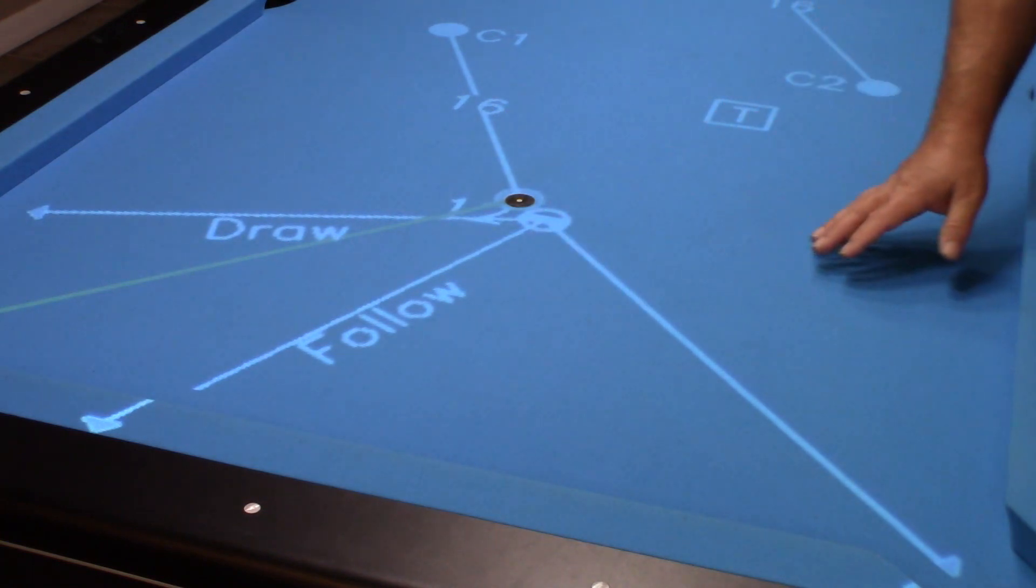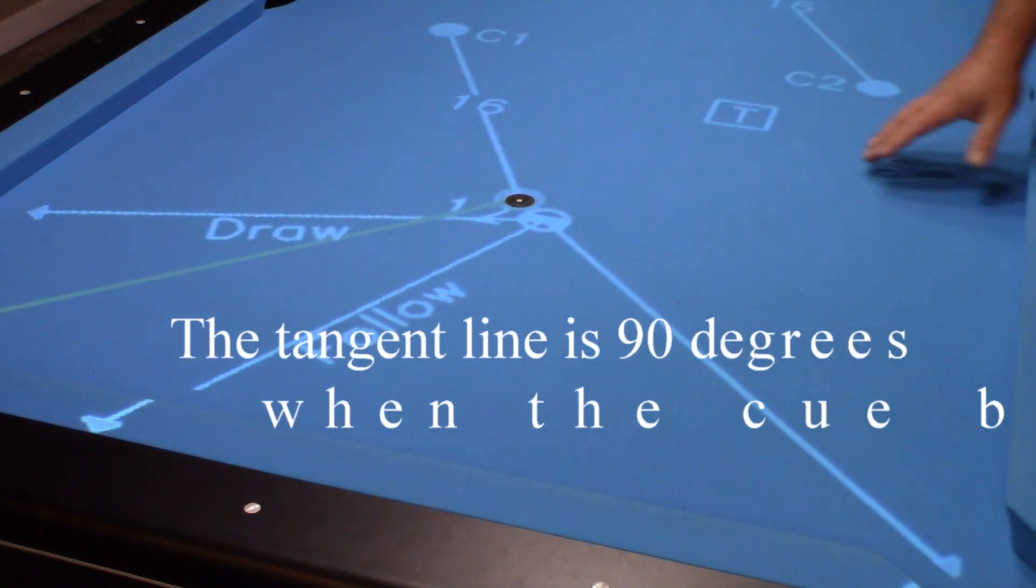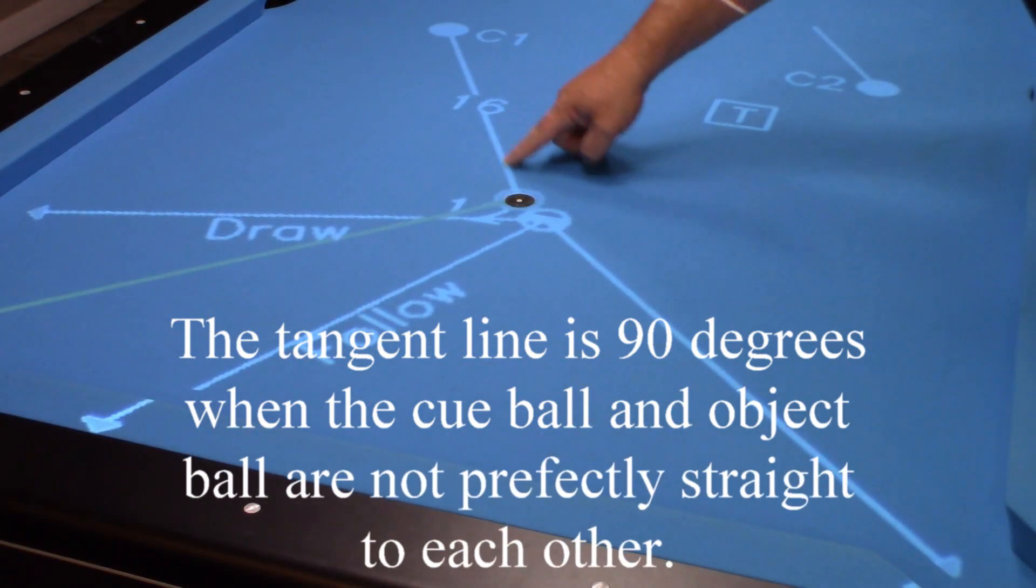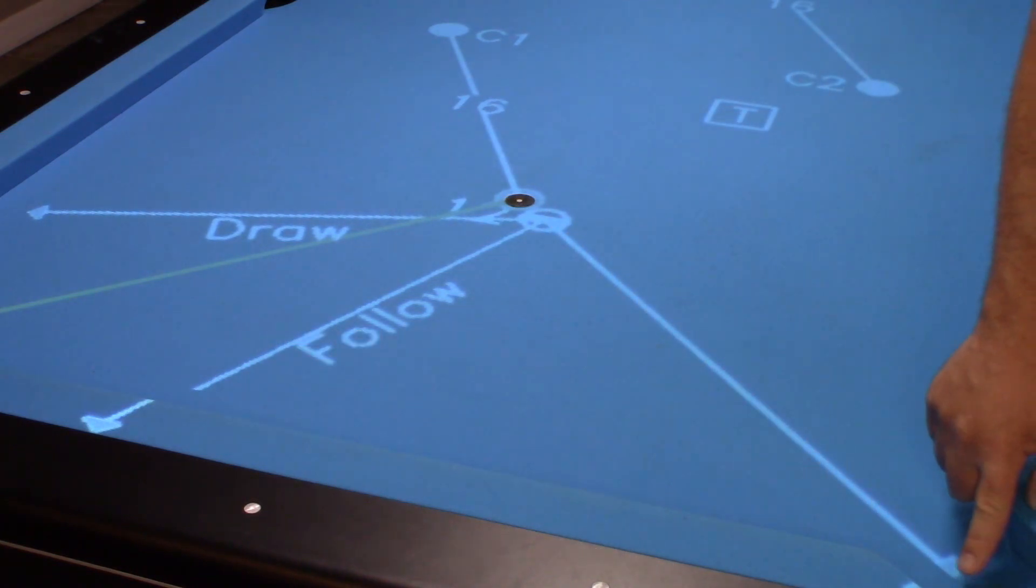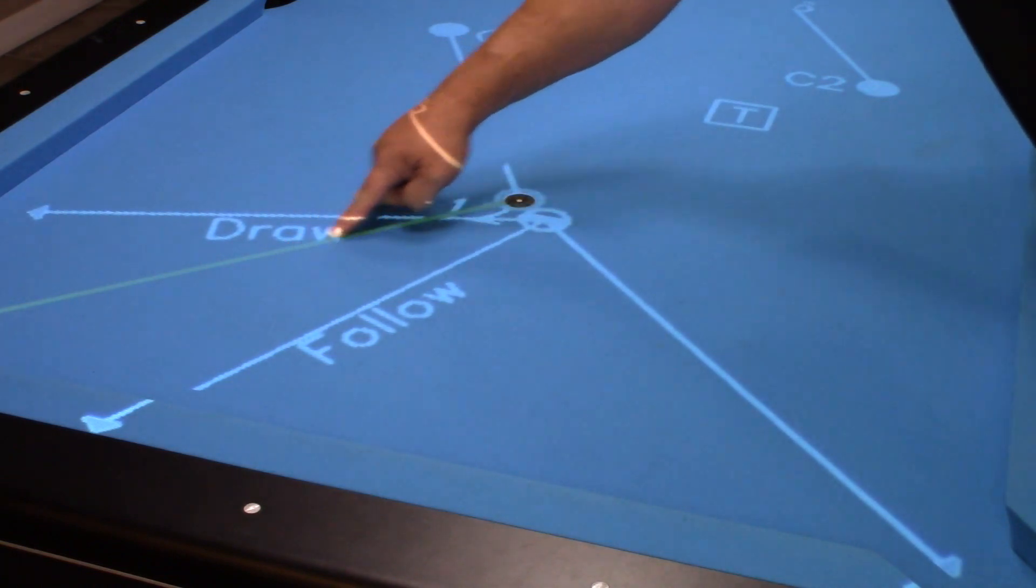Again, the tangent line is going to be 90 degrees. So you can see the way I have it laid out, my object ball would be right here. I'm shooting it into this corner pocket, and you can see that 90 degree angle right here.